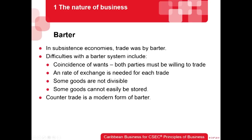So these are some of the problems associated with the batter system. First, coincidence of wants — both parties must be willing to trade, meaning I have to find what I'm looking for and you have to have what I want. Second, exchange rate — both parties must agree on what their products are worth. Third, some goods are not divisible — a live animal cannot be divided for exchange. Fourth, some goods cannot easily be stored — goods spoil easily without refrigeration.